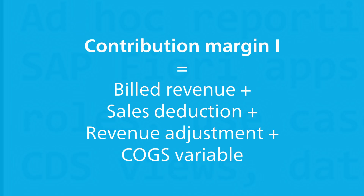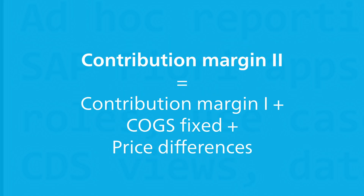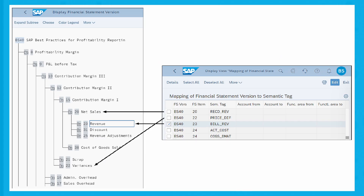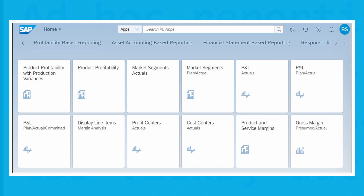For example, the calculation logic uses a combination of these measures. To finish off, let's talk about the assignment of semantic tags to FSV items. For correct calculation of measures in the app, you must double verify the assignment of all the semantic tags to the correct accounts or FS item nodes of the FSV. It's common that different sets of semantic tags are used for different FSVs, so it's important and recommended to verify these assignments to avoid incorrect calculation of measures. The assignment of semantic tags to accounts or FS item nodes fully relies on the FSV key used in the app.